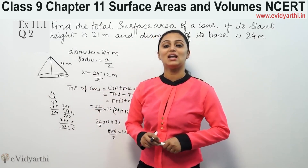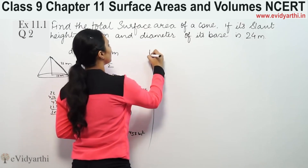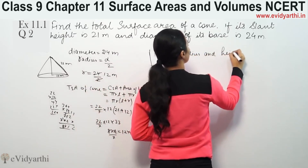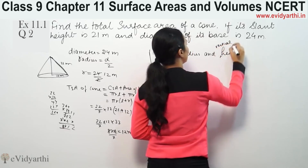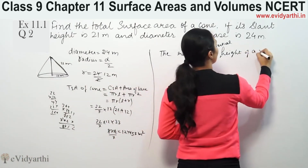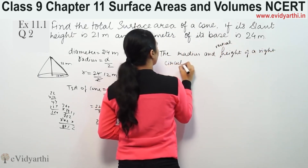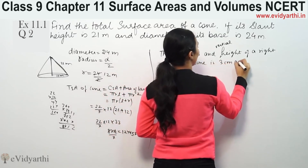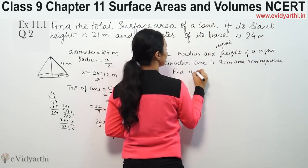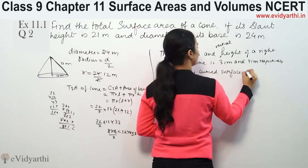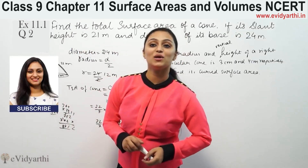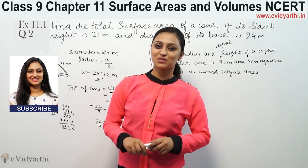This was question number 2 from exercise 13.3. Now it's your turn to solve a question. Suppose the radius and vertical height of a right circular cone are 3 cm and 4 cm respectively — find its curved surface area. Let's see how many of you give the correct answer. Check the next video for more questions. Goodbye!